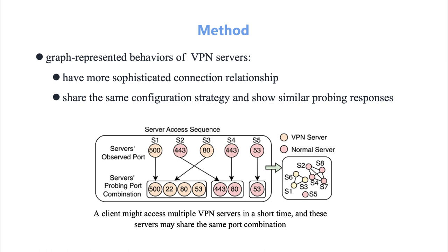A client might access multiple VPN servers in a short time, and these servers may share the same configuration strategy and show similar probing responses. We construct a probing graph based on this phenomenon and utilize new features related to probing response behaviors to capture the general characteristics of VPN servers.